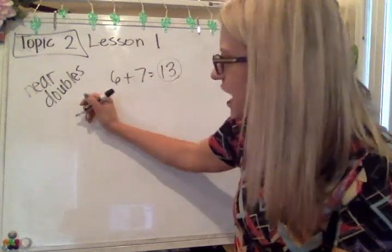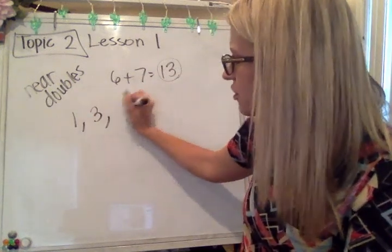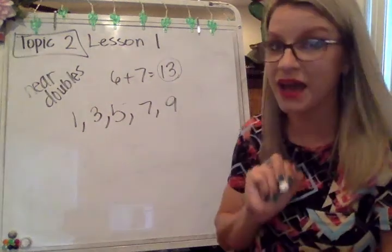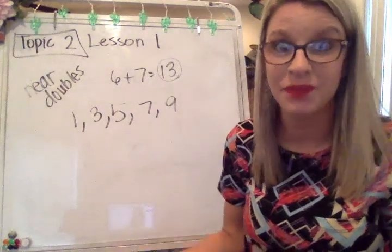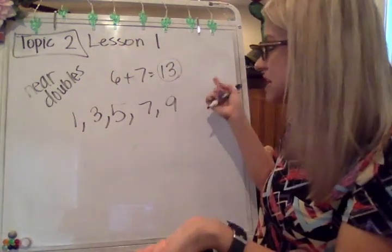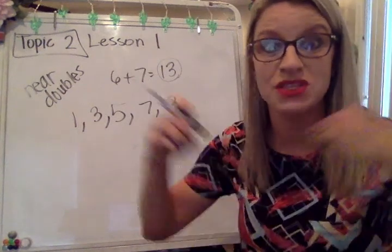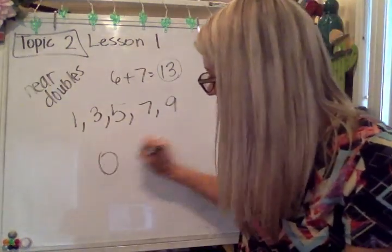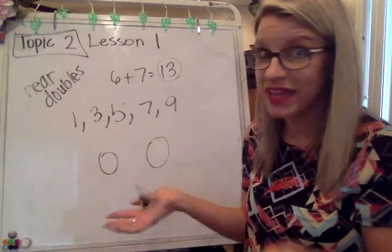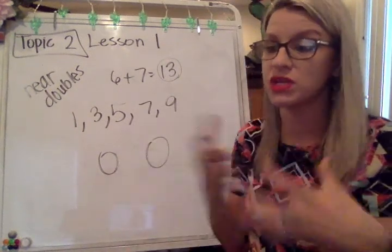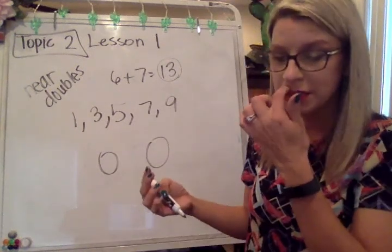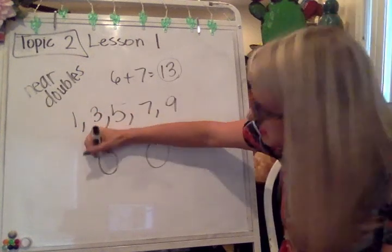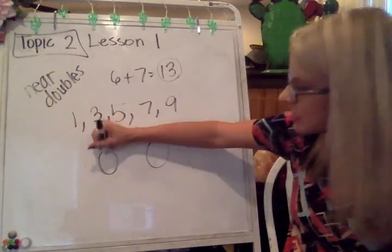Odd numbers have a one, a three, a five, a seven, or a nine in the ones digit — that's kind of what the pattern ends up being. If I was to have thirteen objects and I want to see if I can put them into two equal groups, pretend you have two plates. That is going to be the way that we look at that — if I have thirteen, I want to see if I can put the same number on each plate.